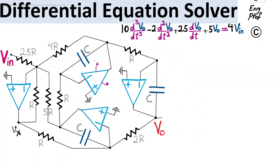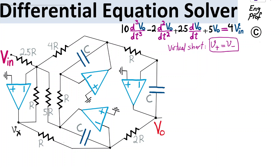Let's make the assumption that the positive-negative voltage supplies are properly connected for all op-amps and negative feedback is dominant. As a result, virtual short is valid for each op-amp, which means that the voltage at the positive input terminal is the same as the voltage at the negative input terminal. Looking at all the positive input terminals, they are connected to virtual ground. So I'm going to write zero volts on the negative terminals due to virtual short.